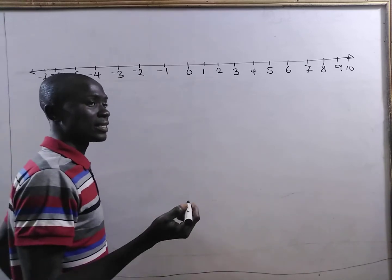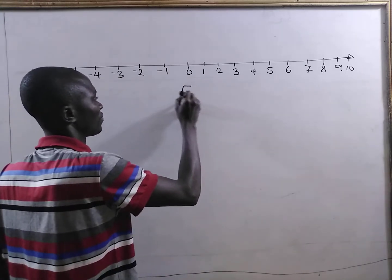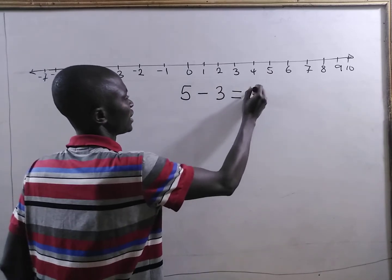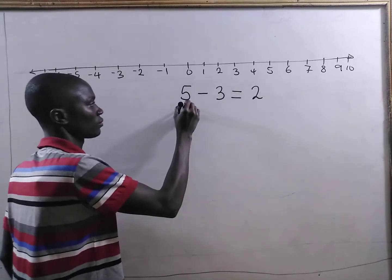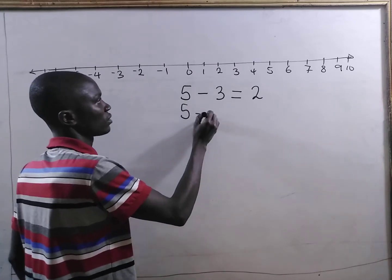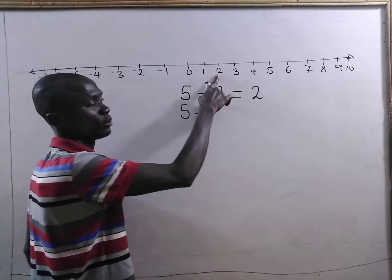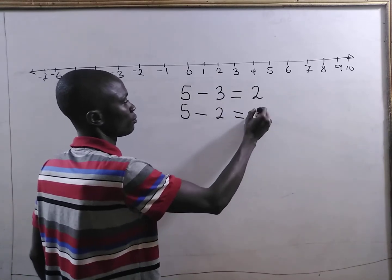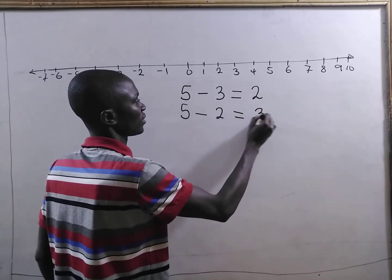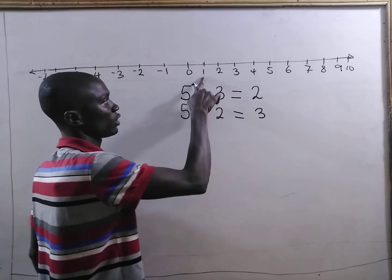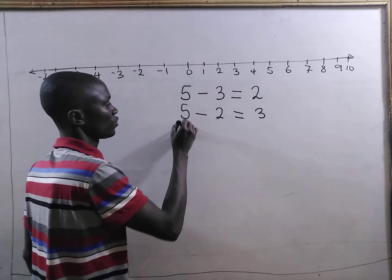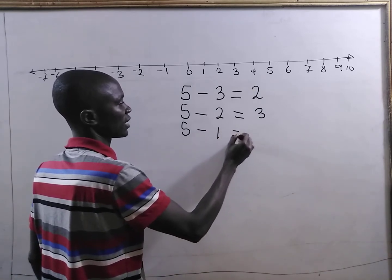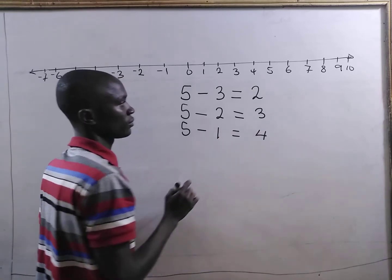Let's take 5. Let's take 5 minus positive 3. This gives positive 2. From 5 minus positive 3, we are moving to positive 2. Then 5 minus positive 2 gives positive 3. From positive 2, we are moving to positive 1. So, 5 minus positive 1 will give us positive 4.